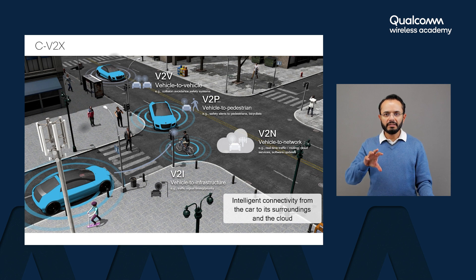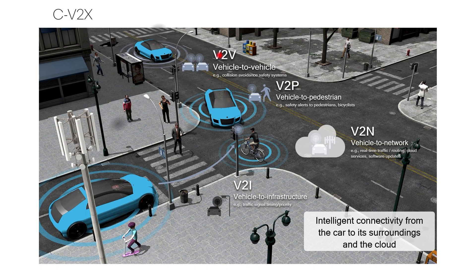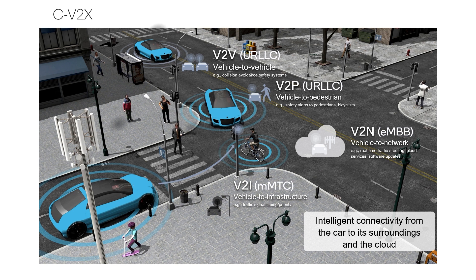Although all these use cases make sense on their face, there is an underlying concept to keep in mind — the different 5G service classes. V2V and V2P, because they require ultra-high-reliability and low-latency communication, are prime targets for URLLC. Vehicle to Network communication, involving cloud computing and requiring significantly higher bit rates, is more of an eMBB use case. Vehicle to Infrastructure relates more to massive IoT because of the amount of infrastructure involved. This slide shows how a seemingly simple use case can have multiple aspects.